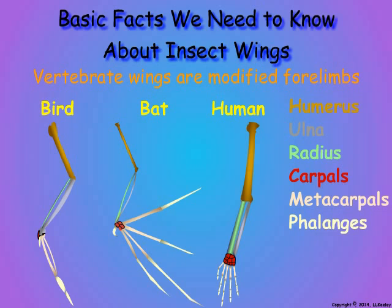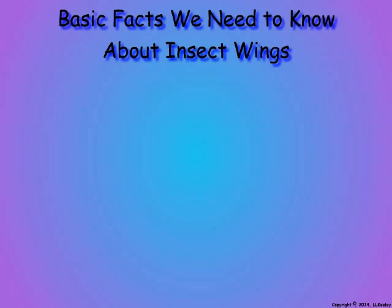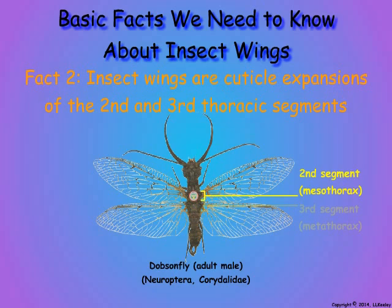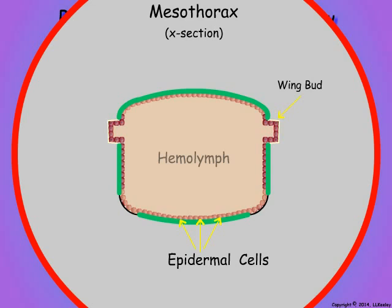Let us now discuss insect wings and flight muscles. The wings of birds and bats are modified forelimbs. Insect wings are not modified forelimbs—they are expansions of the epicuticle of the second and third thoracic segments. Here is a cross section through one of the wing-bearing thoracic segments of an insect that has gradual metamorphosis. This will illustrate the basic structure of the insect wing.